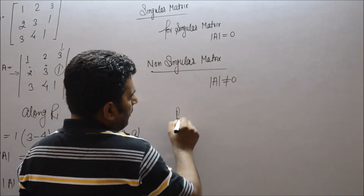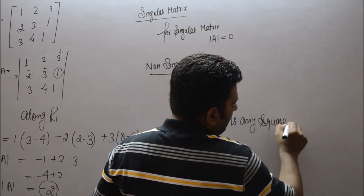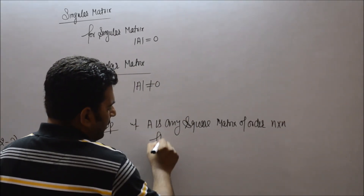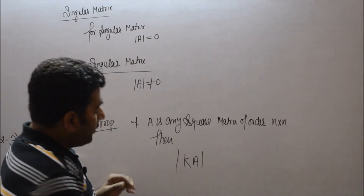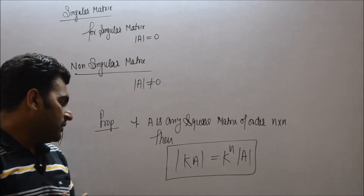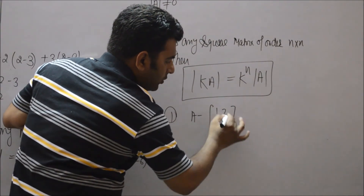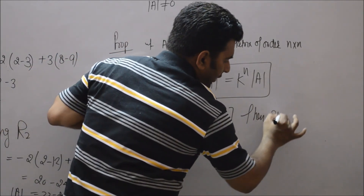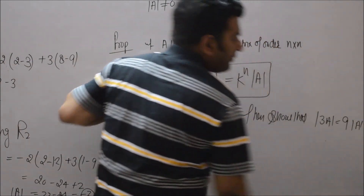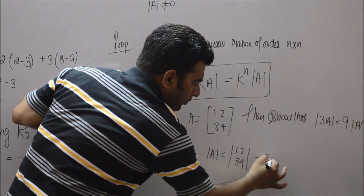There is an important property of determinants: if A is any square matrix of order n×n, then det(kA) = k^n × det(A). This property is very useful for board exams. For example, if A = [1, 2; 3, 4], verify that det(3A) = 9 × det(A). First, det(A) = 1×4 − 2×3 = 4 − 6 = minus 2.